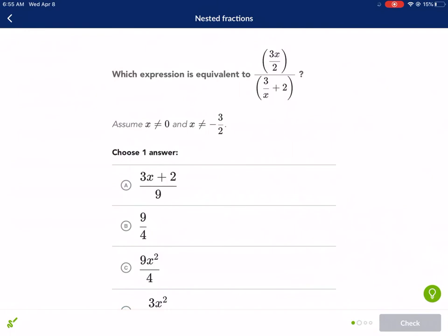All right. 1 of 4. This one is a little bit more tough. So it says which expression is equivalent to 3x divided by 2 over 3x plus 2.